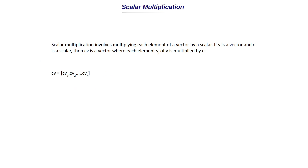The first thing we are going to discuss is scalar multiplication. Scalar multiplication involves multiplying each element of a vector by a scalar. If v is a vector and c is a scalar, then cv is a vector where each element vi of v is multiplied by c. For example, if we have a vector of 1, 2, 3 and a scalar of 3, we multiply each element by 3 and the result is 3, 6, 9.